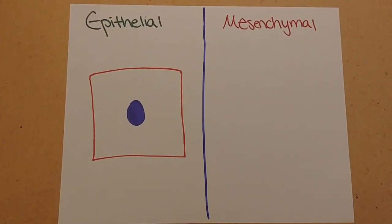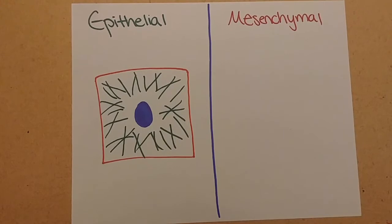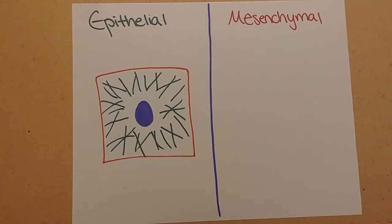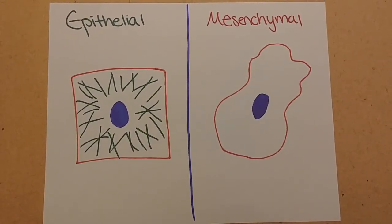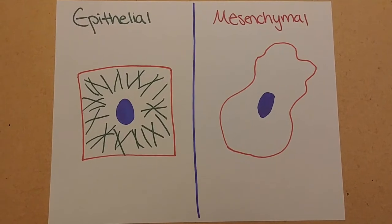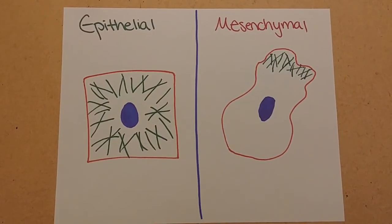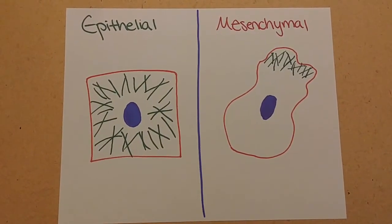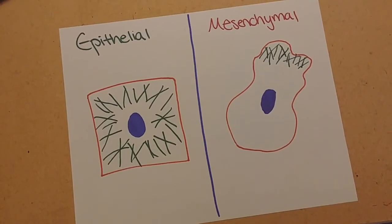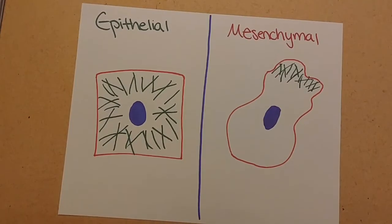Along with this extended morphology, cells undergo actin reorganization. Normal actin fibers form an organized cytoskeleton, but the actin reorganizes in mesenchymal cells to form stress fibers. These actin stress fibers help form lamellipodia, filopodia, and invadopodia, actin-based protrusions that help the cell to migrate and invade.